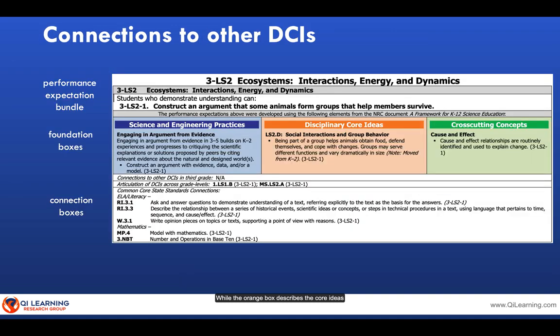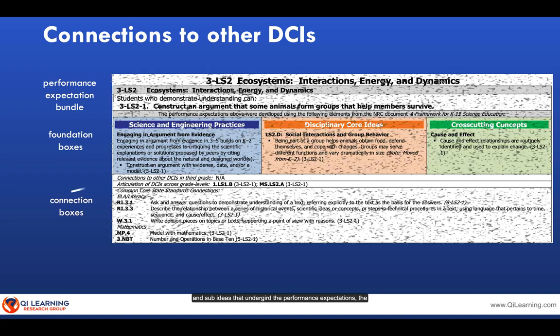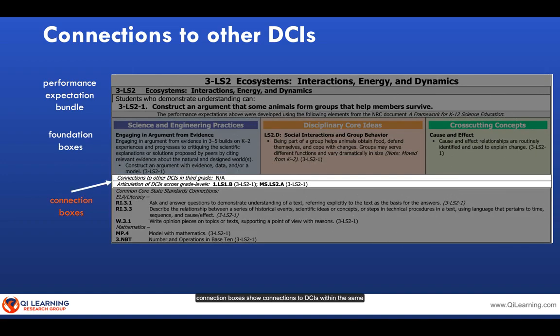While the orange box describes the Core Ideas and Sub Ideas that undergird the Performance Expectations, the connection boxes show the connections to DCIs within the same grade and indicate the articulation of DCIs across grade levels. While different grades may share the same DCIs, each subsequent grade will have higher levels of sophistication within the Performance Expectations.